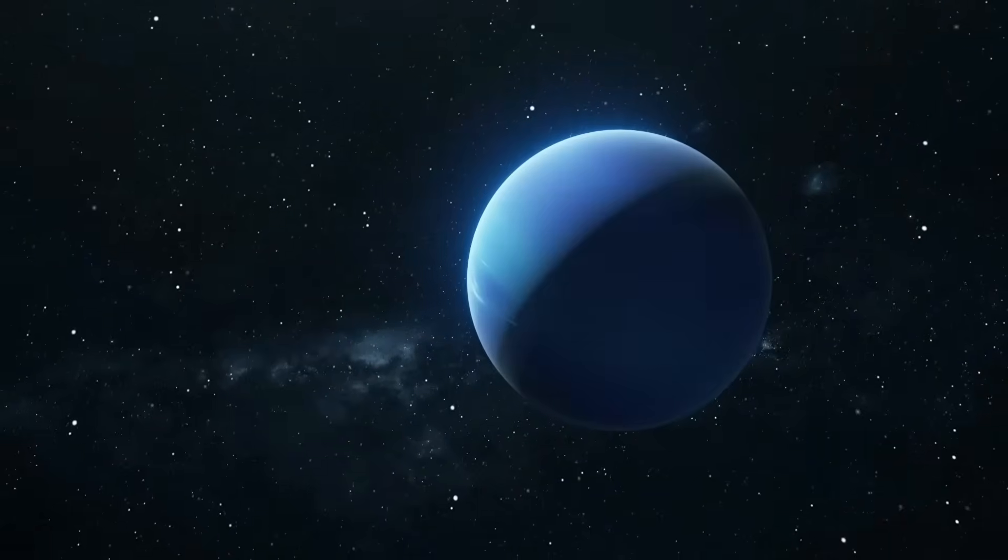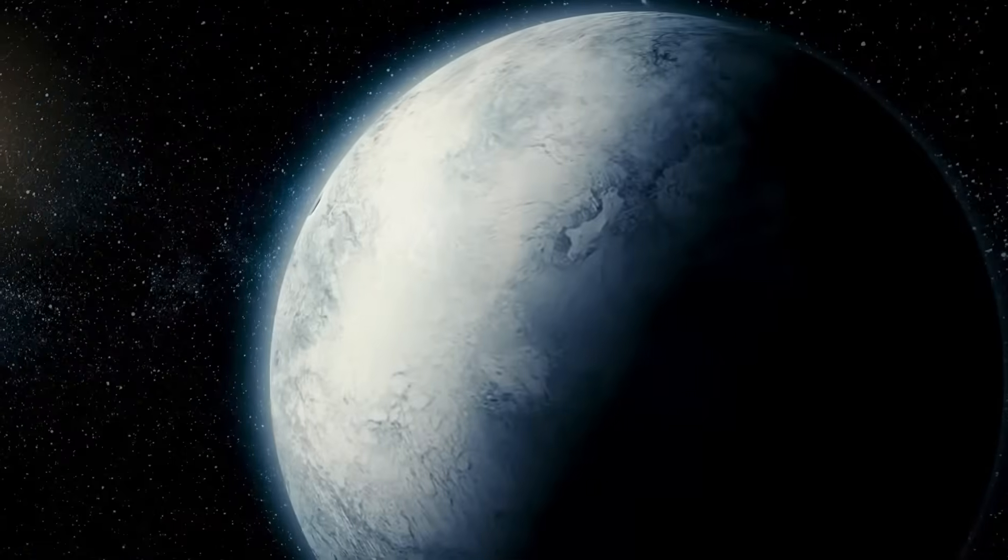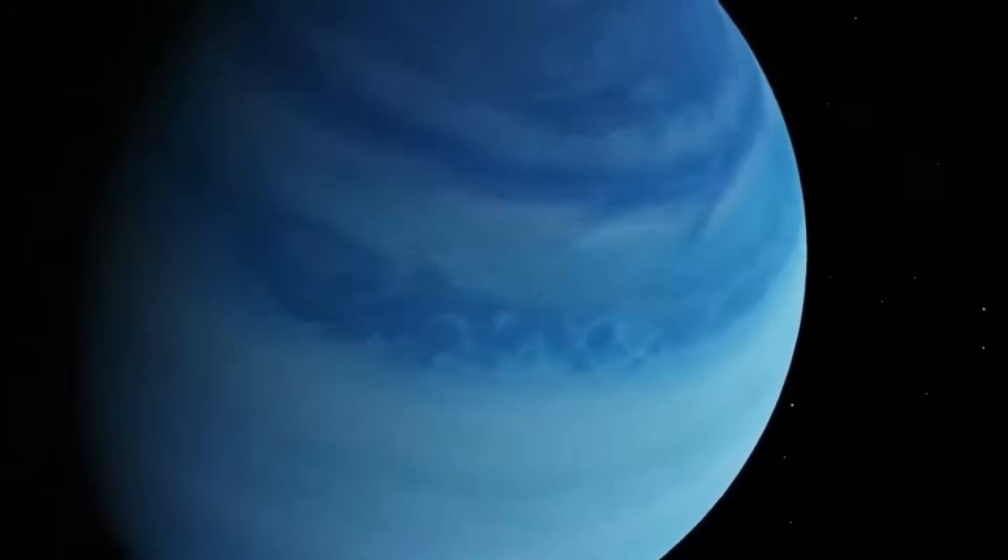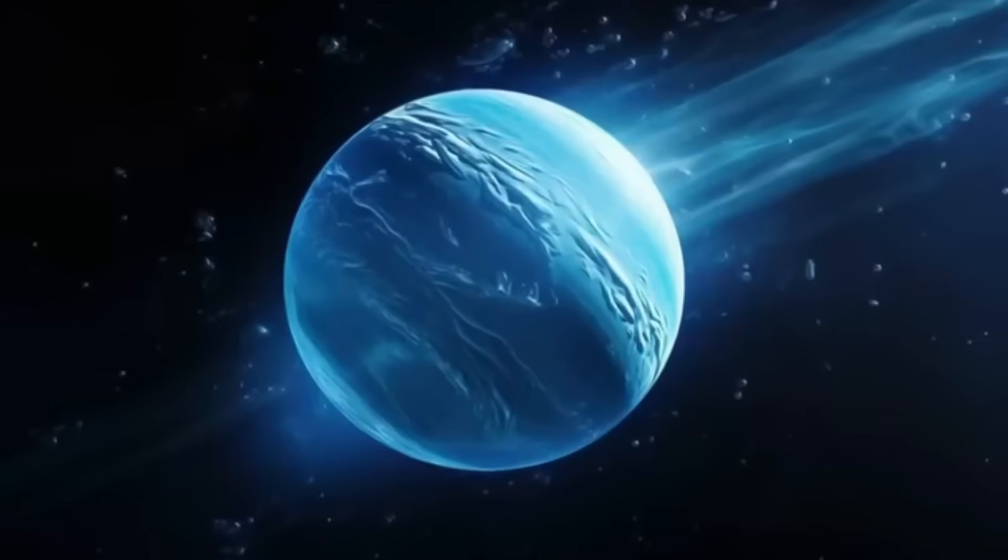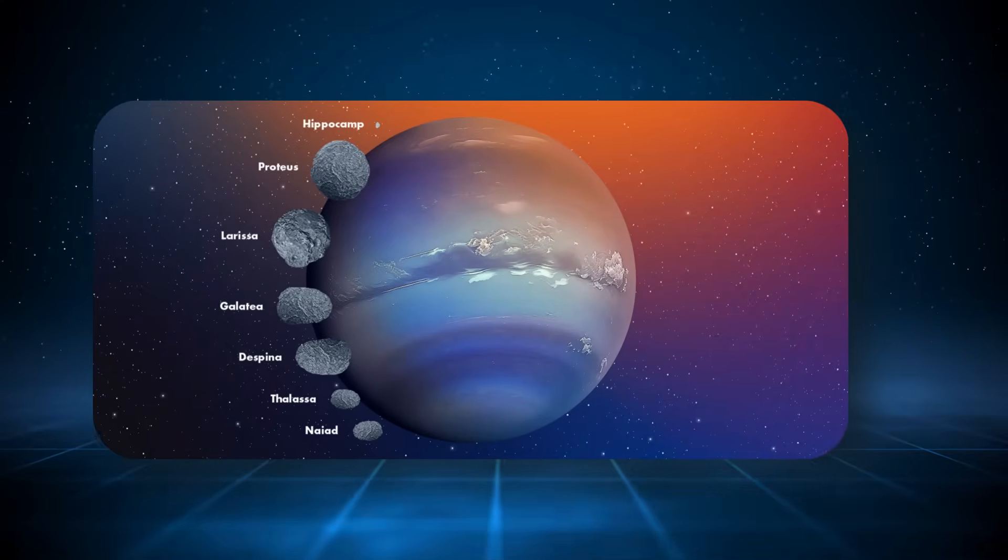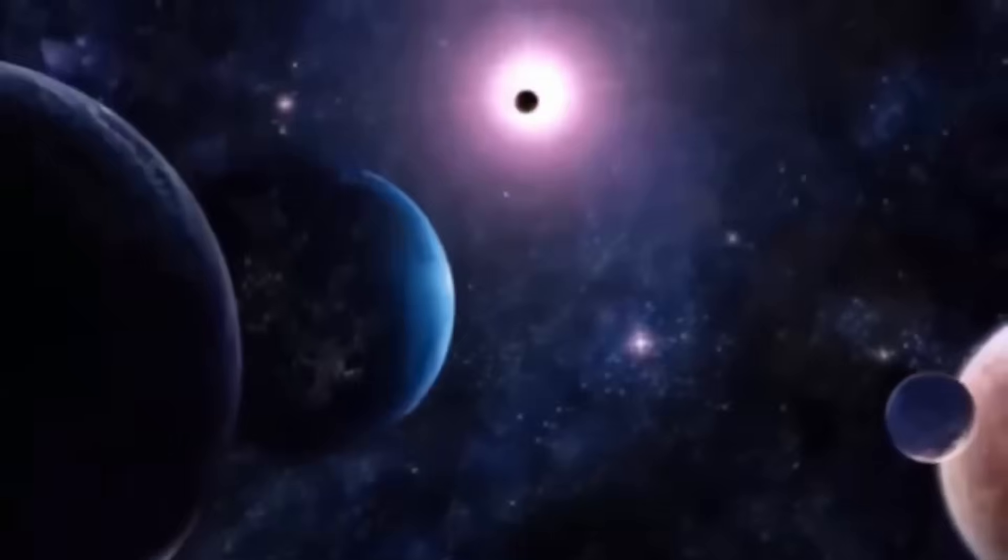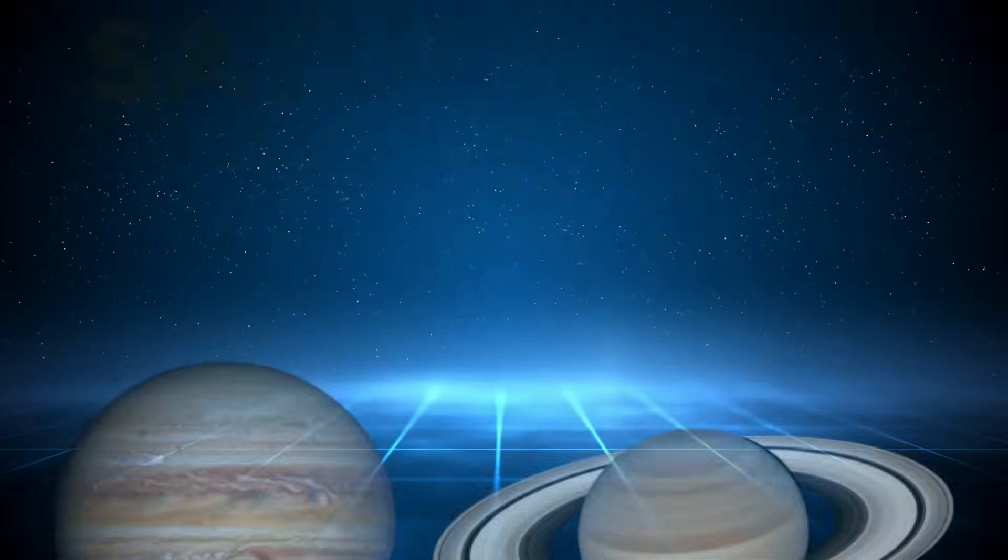Additionally, the idea that Neptune might undergo internal energy events brings up speculation about habitability, not on Neptune itself, which is far too hostile, but on its moons. If Neptune releases heat and electromagnetic energy in periodic pulses, it could serve as a sort of furnace for its moons, providing enough energy to maintain subsurface oceans, as some suspect is the case with moons like Enceladus and Europa around Saturn and Jupiter.